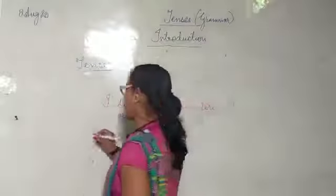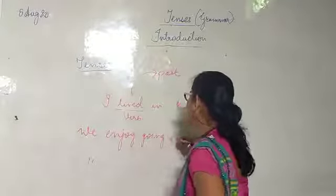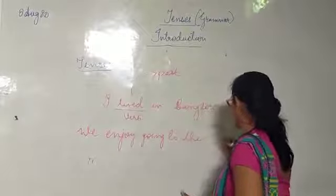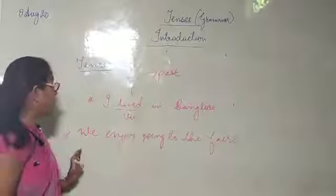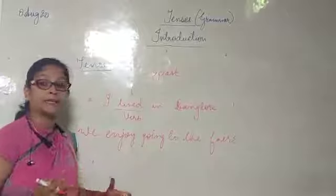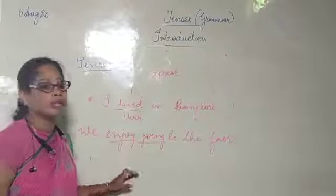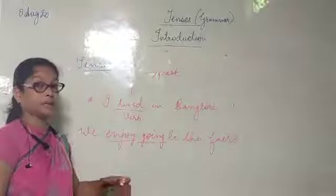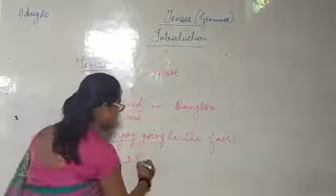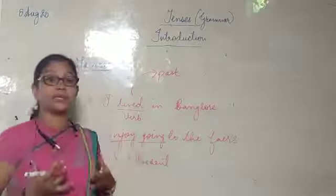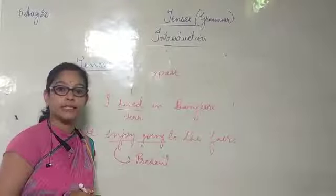Let's take one more example. We enjoy going to the fairs. Here going and enjoy are the verbs. And what is it telling us? That we like going to fairs even now. So the verb here tells us that this is in present form. It is a habitual action. This is our behavior. Whenever we get to go to fairs, we like to go to the fairs.